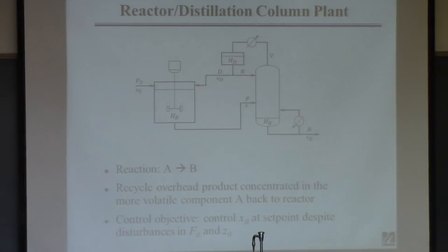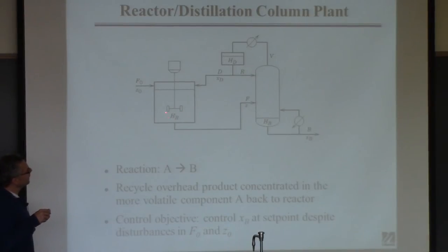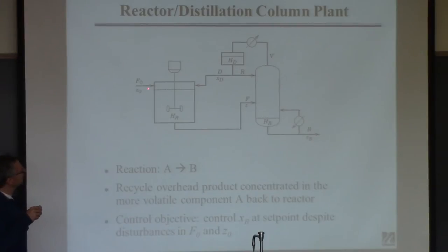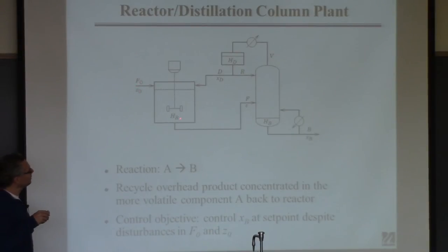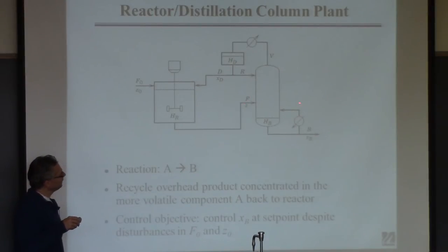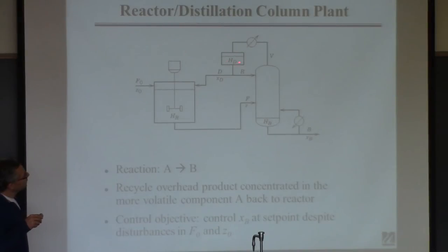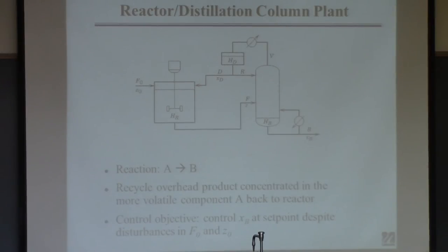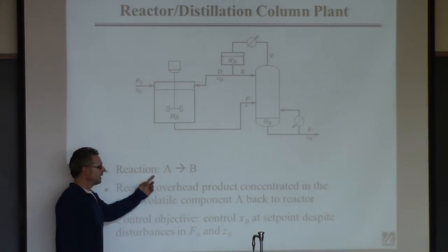Here's a prototypical toy example: a reactor coupled to a distillation column. A reaction such as A goes to B takes place in the reactor. The effluent goes as feed to the column, vapor goes up the column, liquid goes down. The bottom stream is collected as product. The overhead goes to a condenser drum; part is used as reflux back to the column, and the rest is recycled back to the reactor due to incomplete conversion.